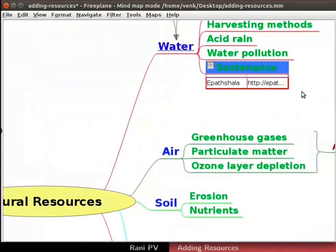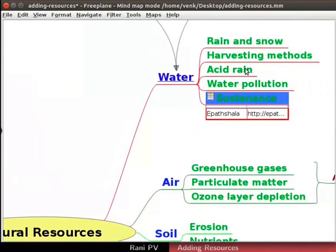First, zoom in on the Sustenance node for clear view. Many nodes can be formatted together to obtain same properties. Select the desired nodes with Shift key and apply the formatting. Similar to nodes, attributes can also be edited in line. Place the cursor anywhere on the existing attribute and right click. The context menu opens.